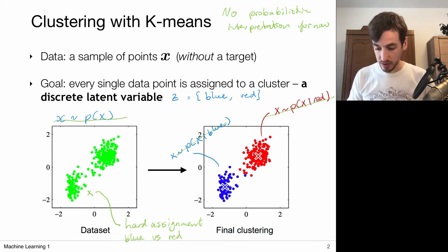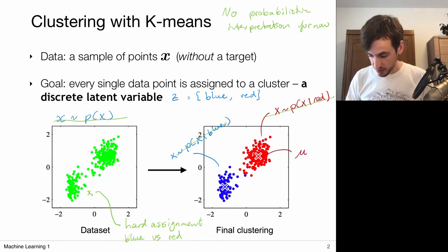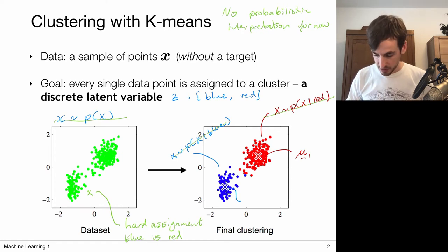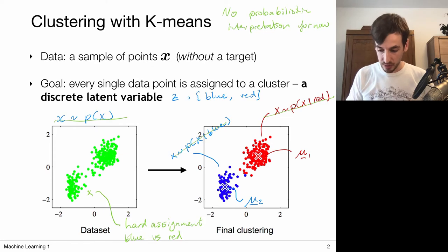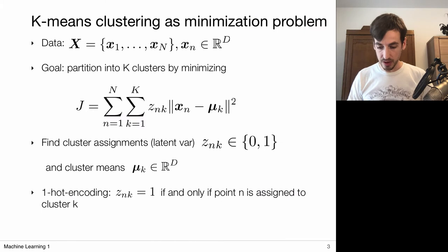We're going to do this via the k-means clustering algorithm, which is based on the fact that each cluster has its own mean. The cross here is the mean for cluster one, and this cross is the mean for cluster two. Whenever a new data point x comes in, we check which mean is closest and simply assign the point to that class. That is what we're going to do, and the k-means algorithm can be formulated as a minimization problem.